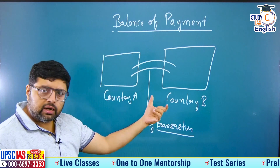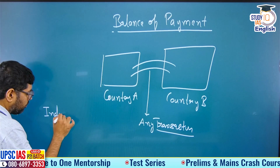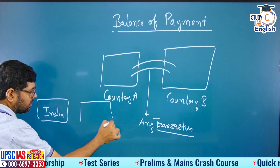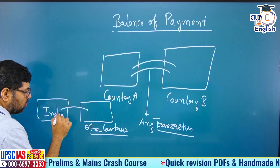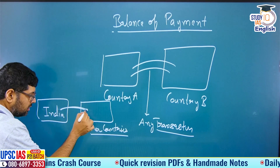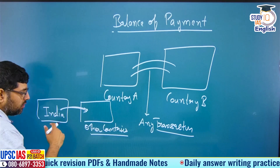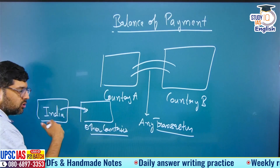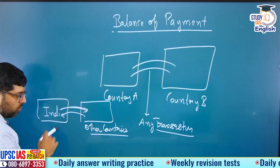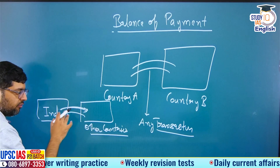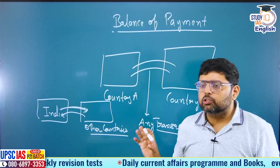Here I have taken an example of country A and country B, but I can replace it like this also. On one side India is there, and on the other side other countries are there — the rest of the world. Every year some foreign currency is going outside India, either in the form of import, or if someone is going outside for any purpose. Similarly, every year some foreign currency is coming to India. Whatever foreign currency is going outside and coming to India in a financial year, and when you record this data with respect to foreign currency, that is known as balance of payment.